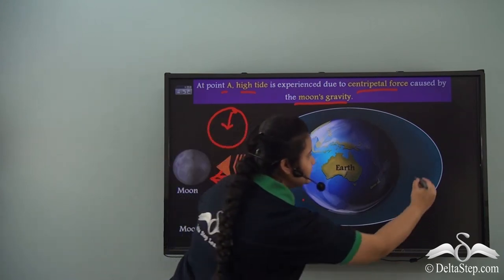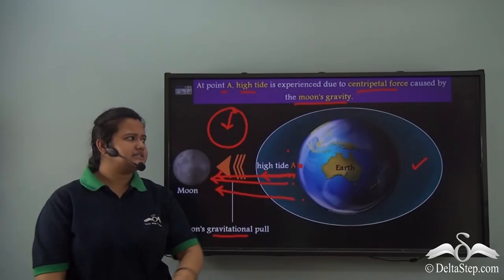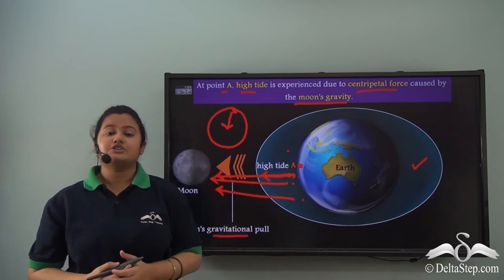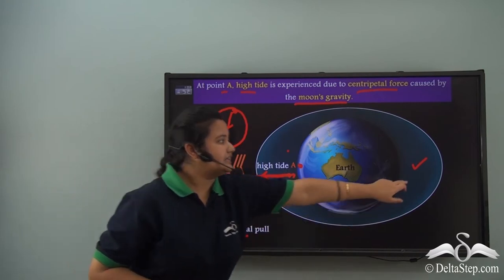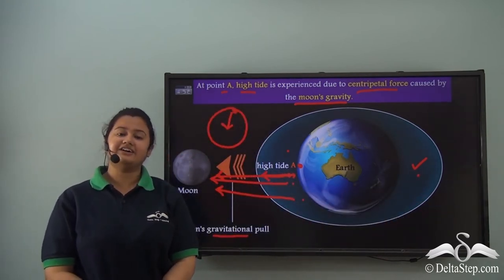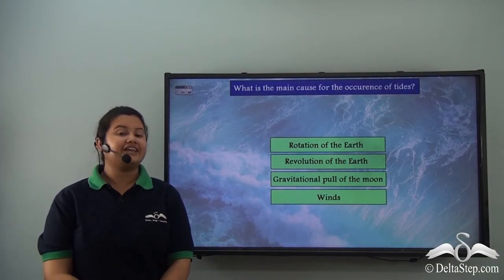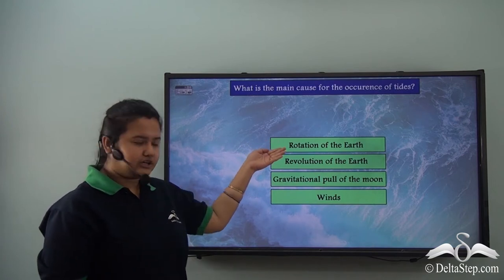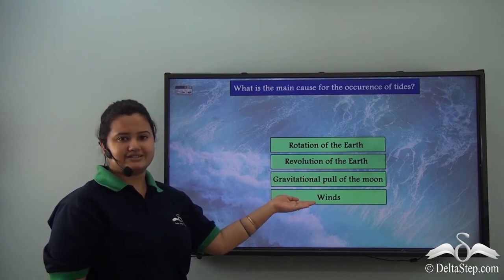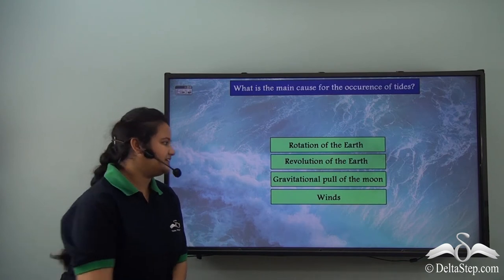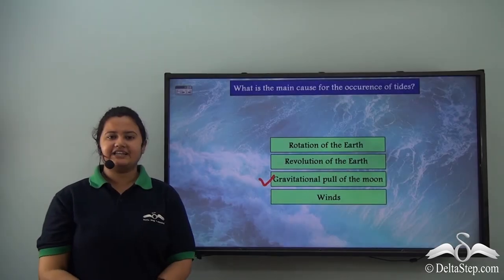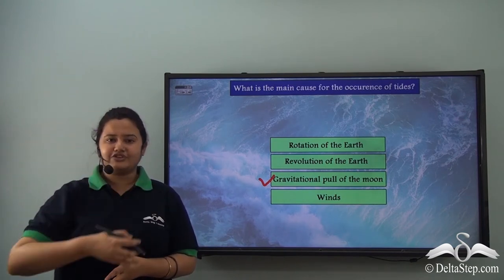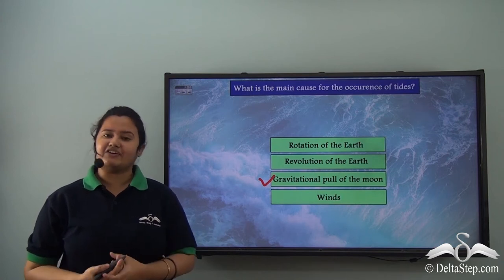Another portion of the earth is also bulged out, but this portion is far away from the moon, so the moon's gravitational pull is least effective here. There must be another reason causing this portion to bulge out. As a quick check: the main reason for the occurrence of tides is the gravitational pull of the moon — not the rotation of the earth, revolution of the earth, or winds. The gravitational pull of the moon attracts the water bodies on the earth's surface and causes them to bulge out.